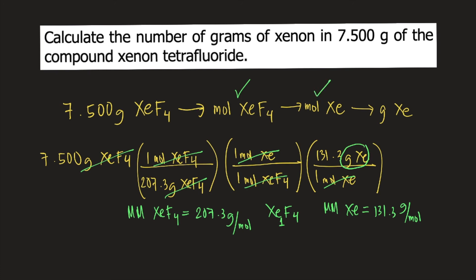Now that all the conversions are set up, plug the entire equation into your calculator. The result is approximately 4.750 grams of xenon. This is the answer to the question.